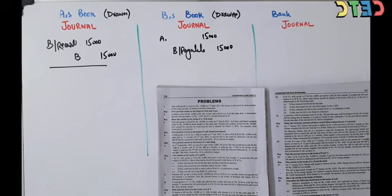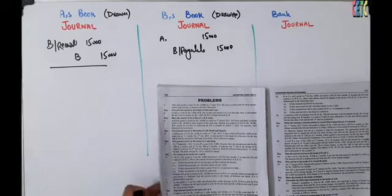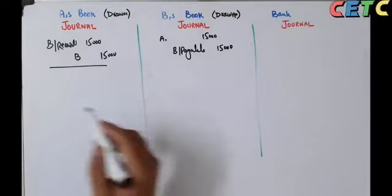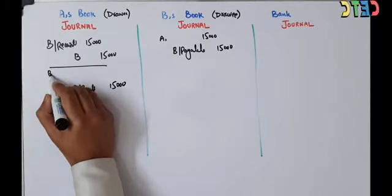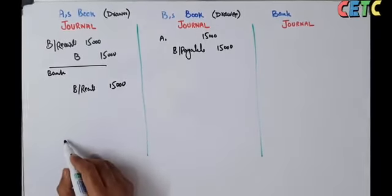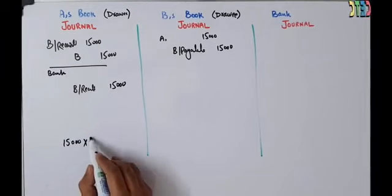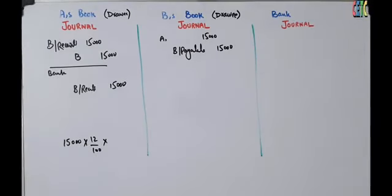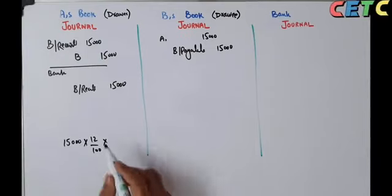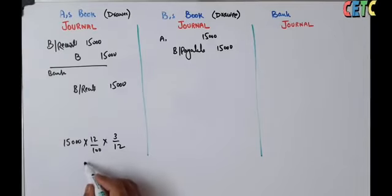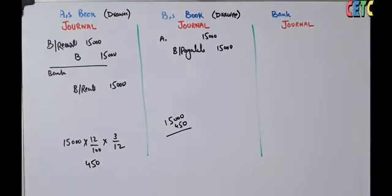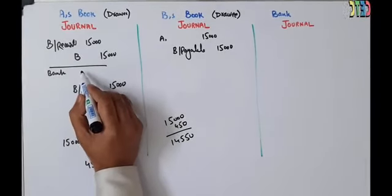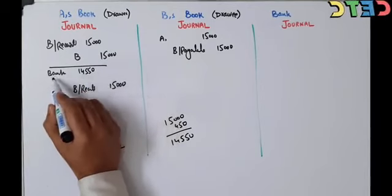A got the bill discounted by his bank at 12% per annum. तीन महीने का bill है, 12% interest rate है। A ने अपना bill bank से discount करवा लिया — अब bill bank के पास चला जाएगा। A की book में Bills Receivable credit ₹15,000 होगा। Discount calculate करते हैं: ₹15,000 × 12% × 3/12 = ₹450। Bank ₹15,000 में से ₹450 काट कर ₹14,550 A को देगा। Entry: Bank debit ₹14,550, Discount debit ₹450।